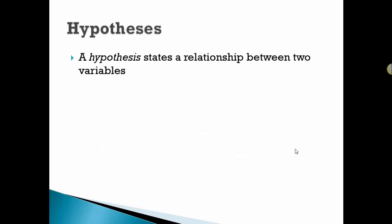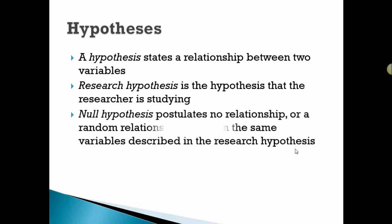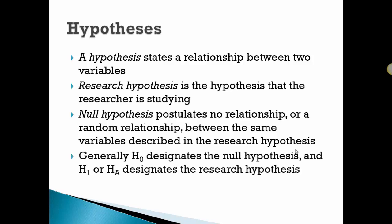A hypothesis states some kind of relationship between two variables, and the research hypothesis, or sometimes called alternative hypothesis, is the one the researcher is studying. The null hypothesis usually postulates no relationship or a random relationship between the same variables described in the research hypothesis. Usually we use H₀ as the null and H₁ or Hₐ as the research hypothesis.